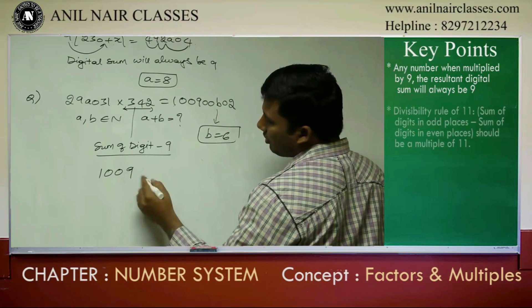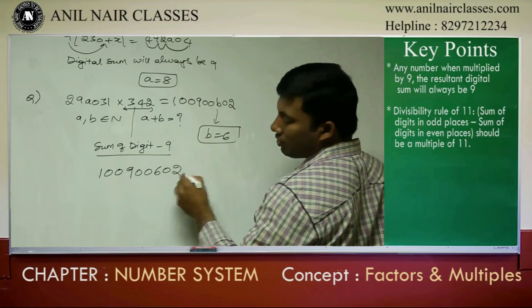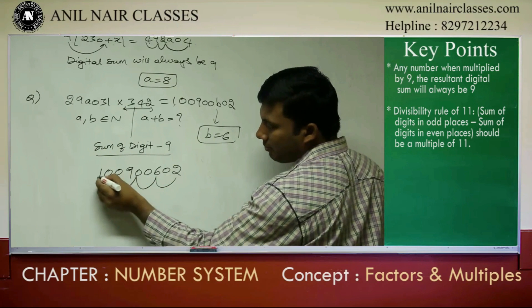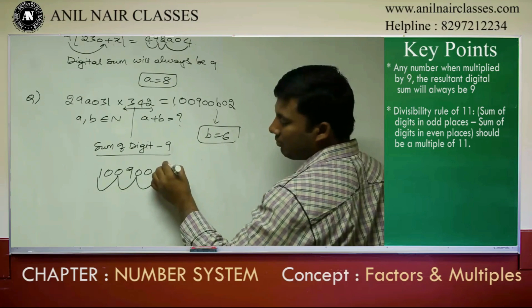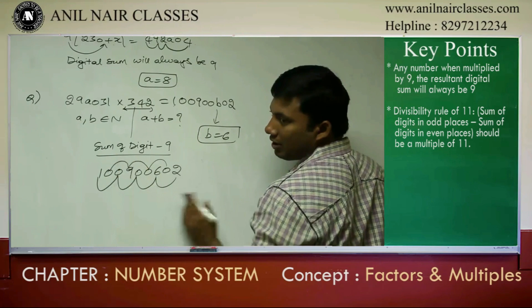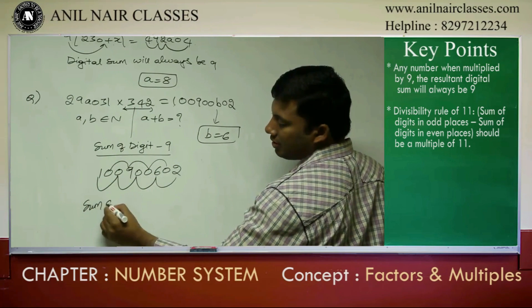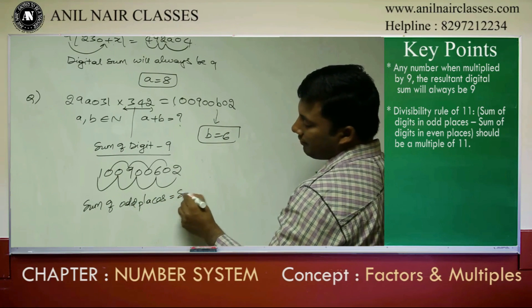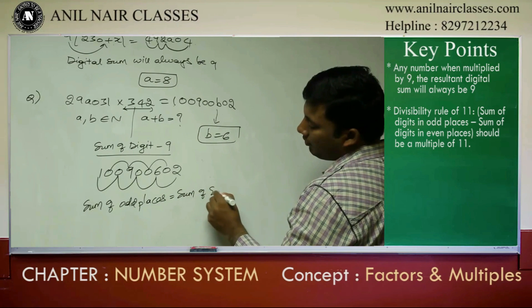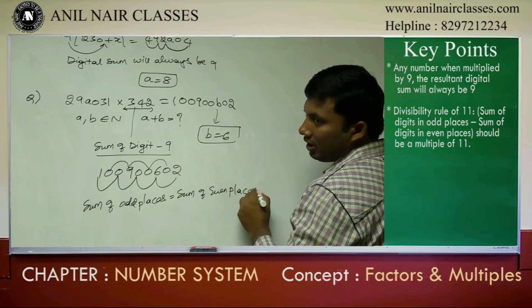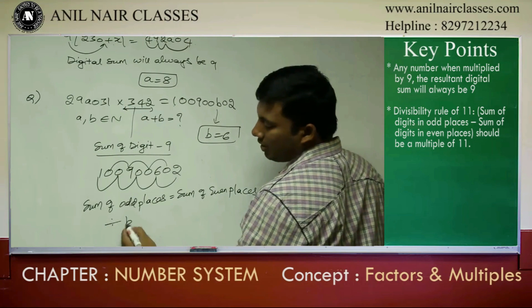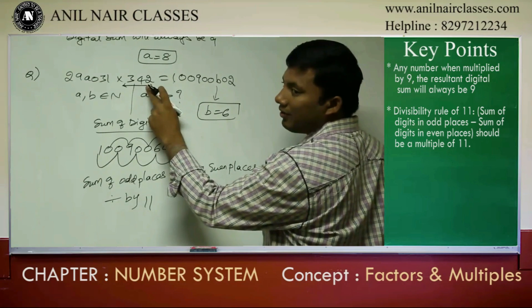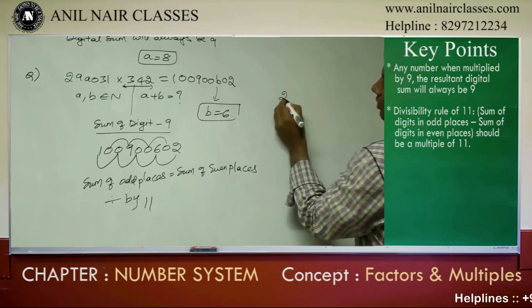After getting B value, see here: 100900602. What is the sum of the odd places? 6 plus 2 is 8, 8 plus 1 is 9. What is the sum of the even places? 9. Sum of the odd places equals sum of the even places — that means the number is divisible by 11. Is 342 divisible by 11? No. That means this product should be divisible by 11.